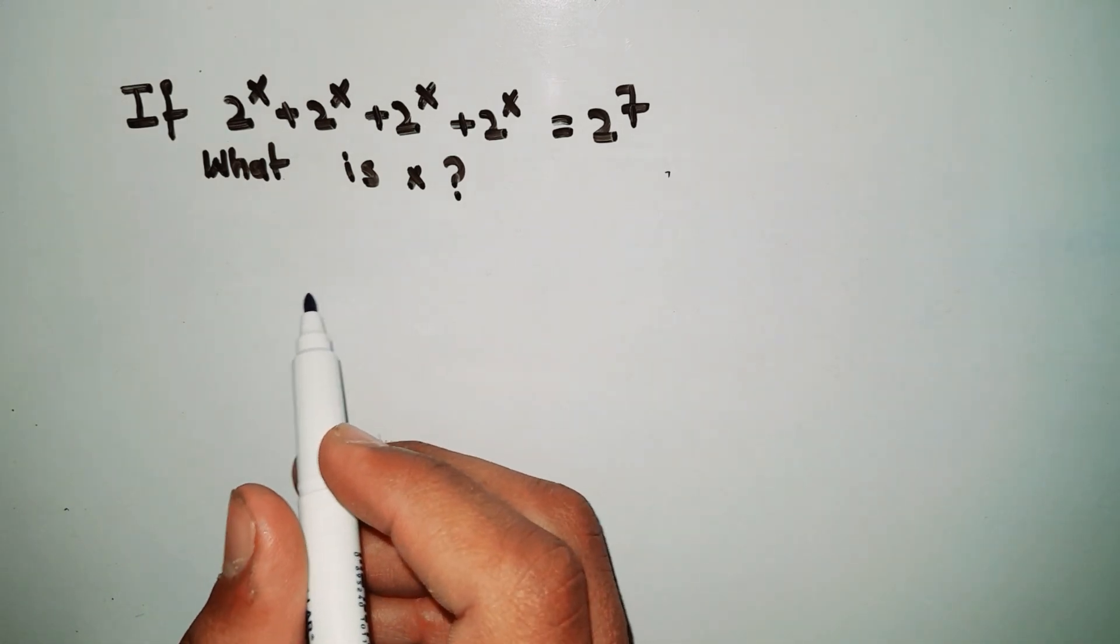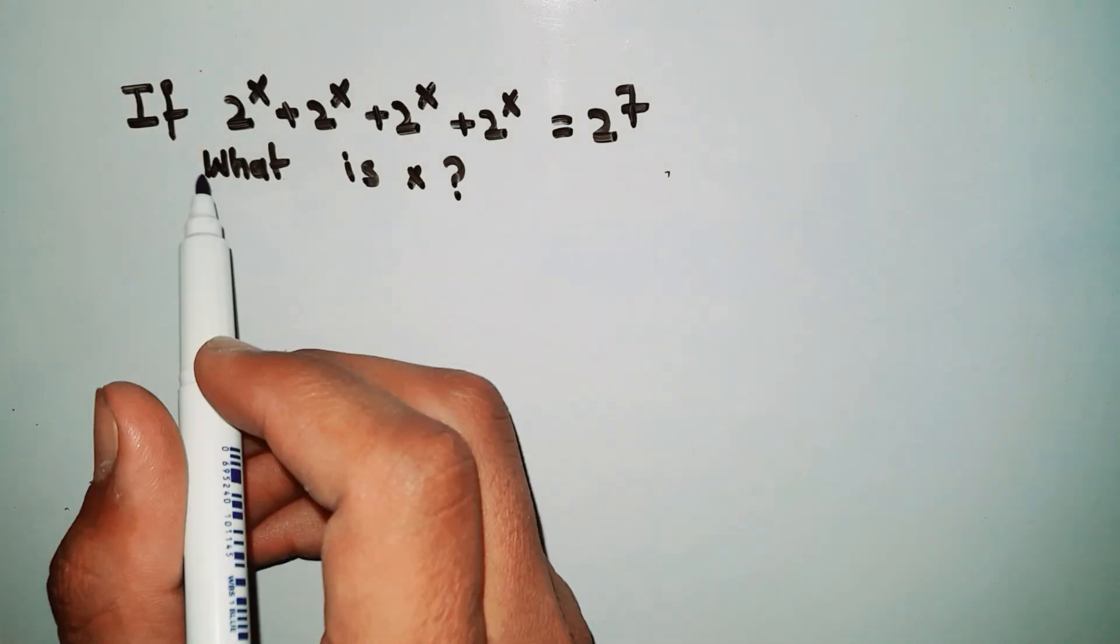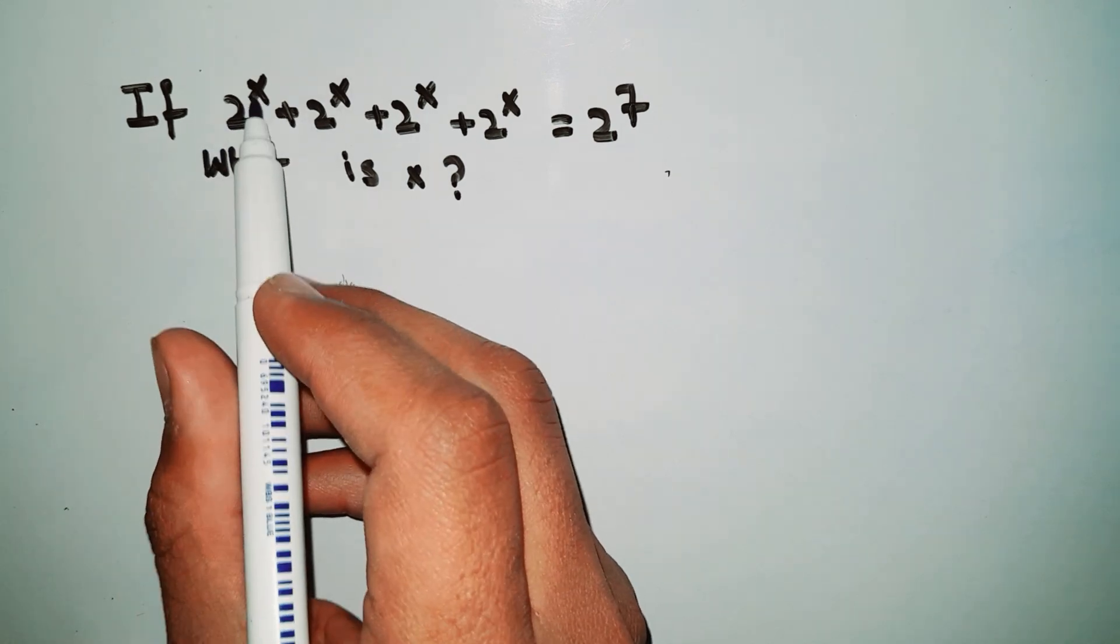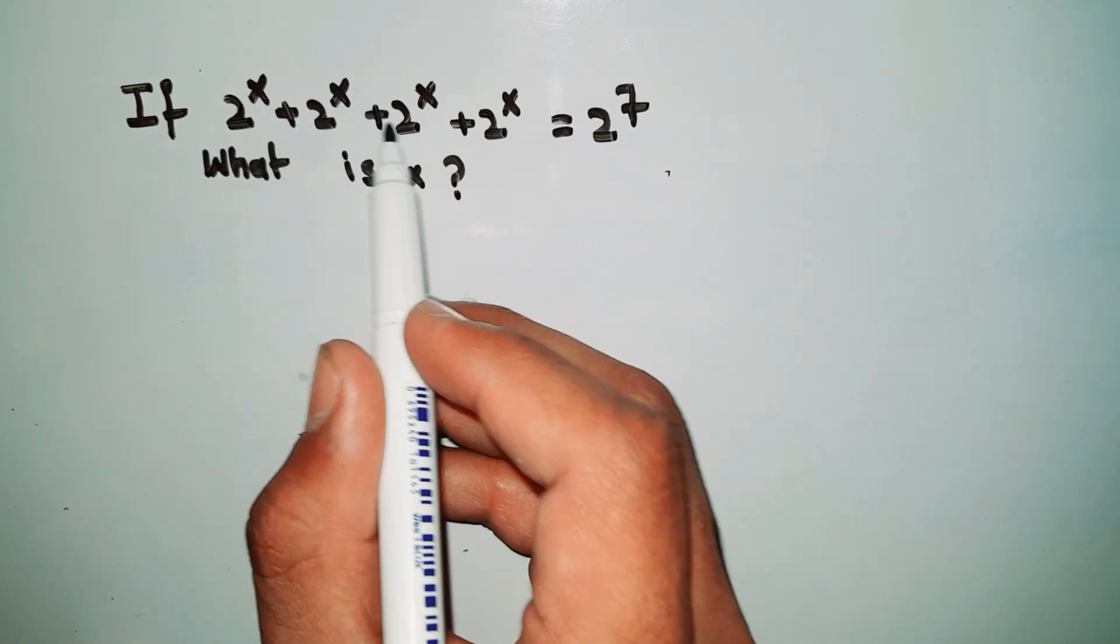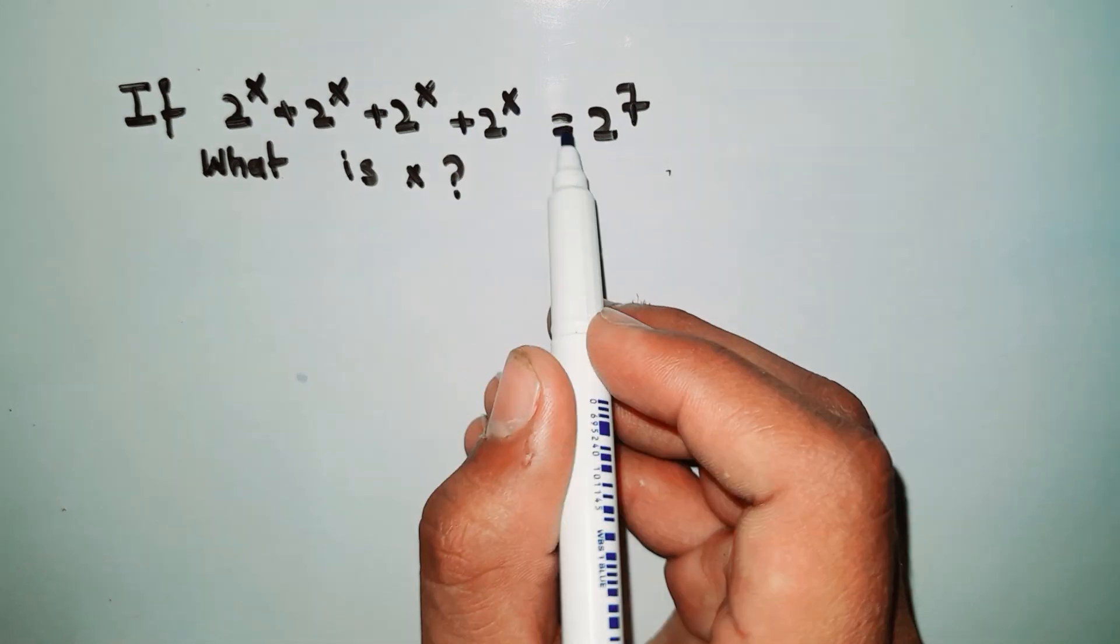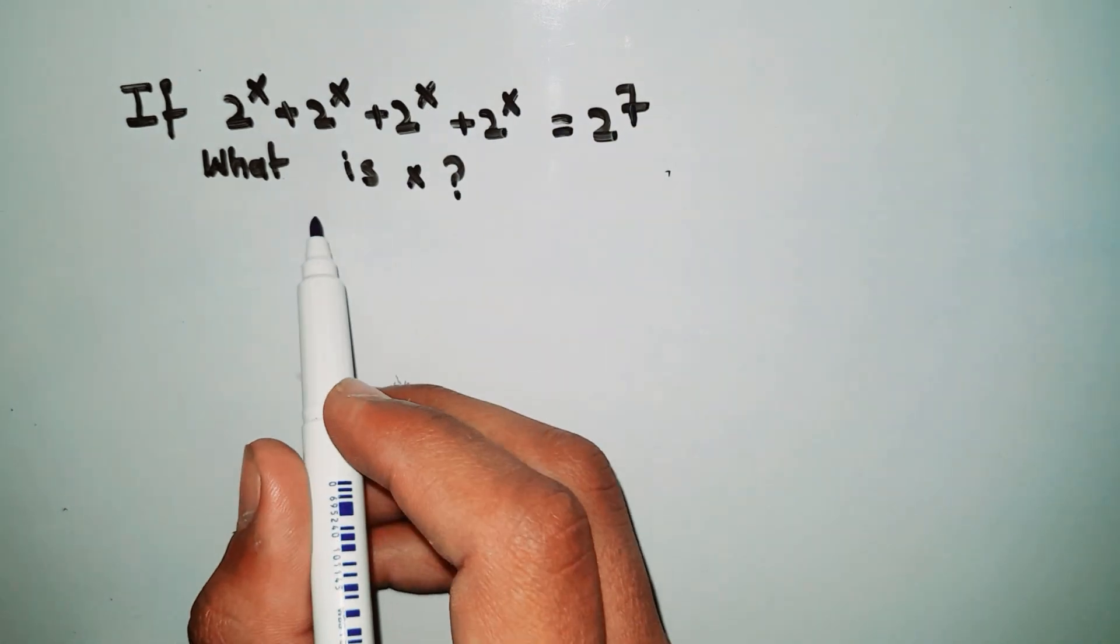Welcome back to another video. In this video we are going to solve this problem: if 2^x + 2^x + 2^x + 2^x = 2^7, what is x?